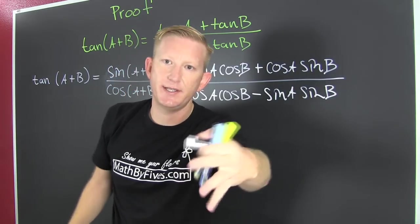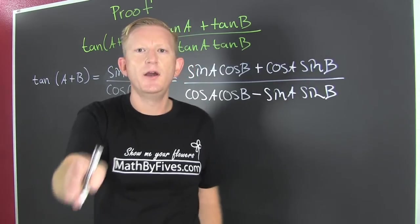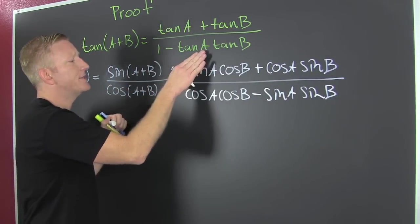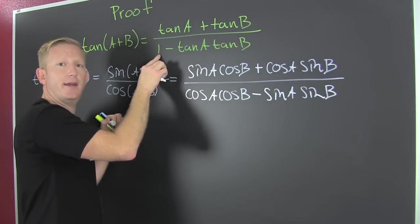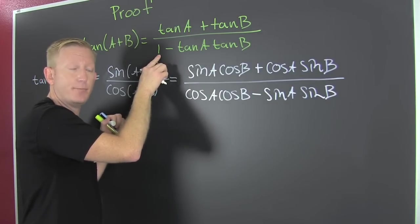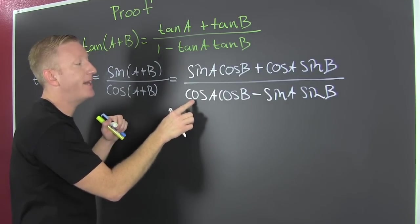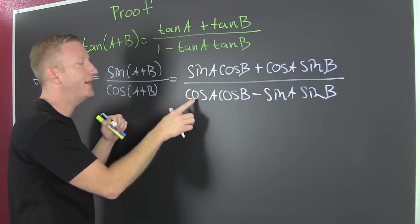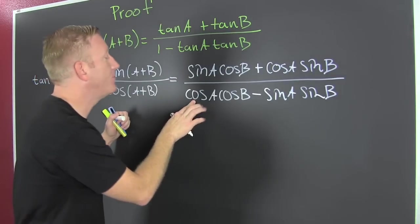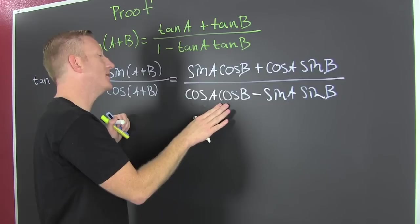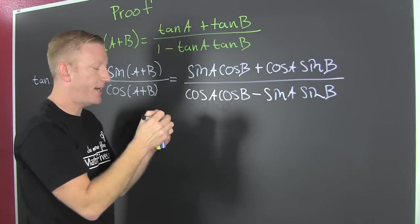Now here's the tricky part. We're looking to see what we need to do to transform it into this left hand side. And we see that one there. This is how you're going to remember what to divide by. You're going to divide everything by this guy. Why? Because I want a one here. So if I divide by cosine A, cosine B, I'm going to get one right there.